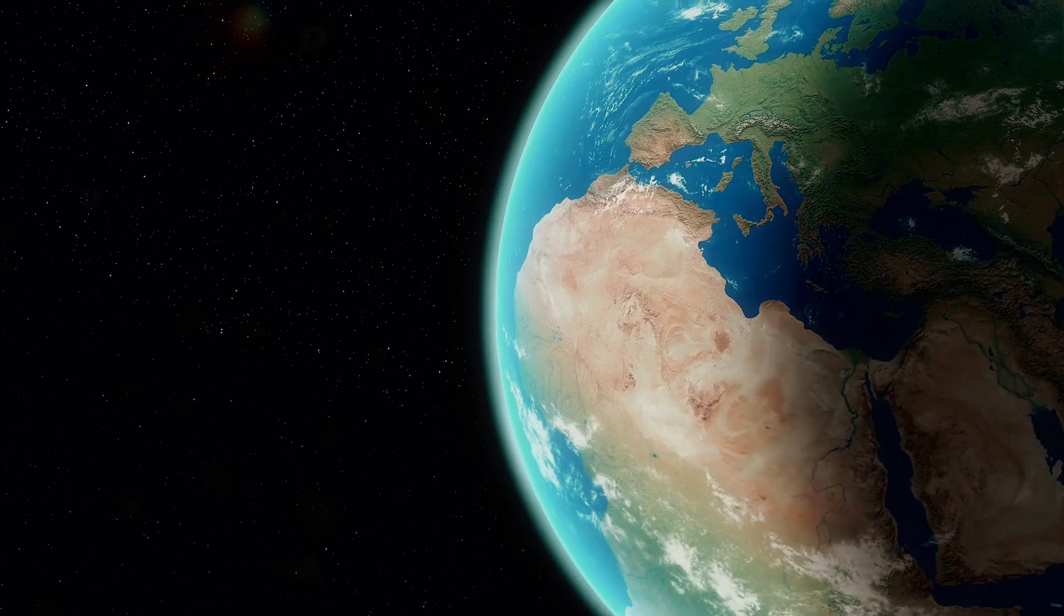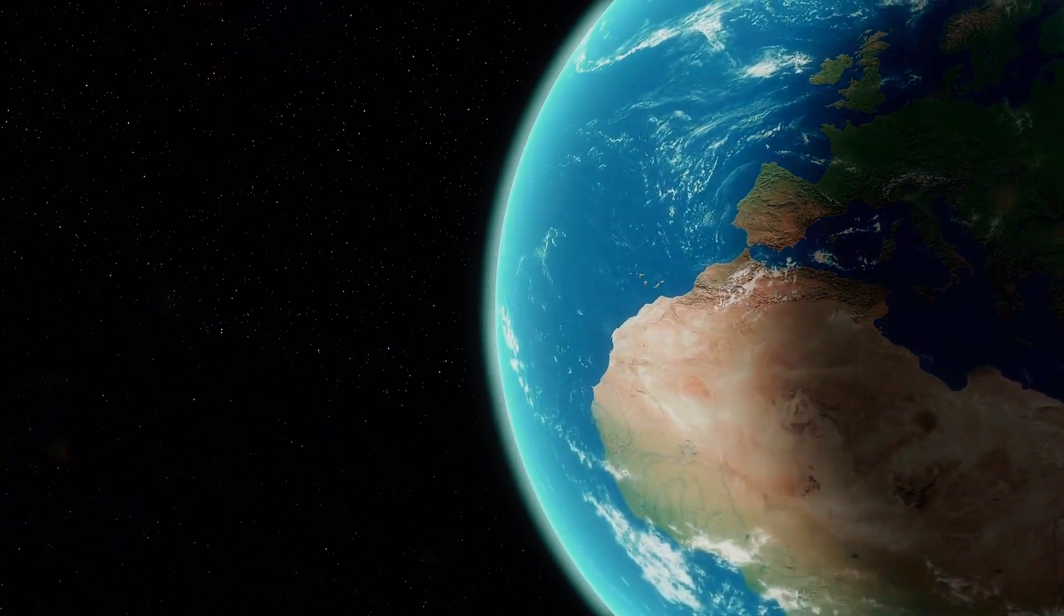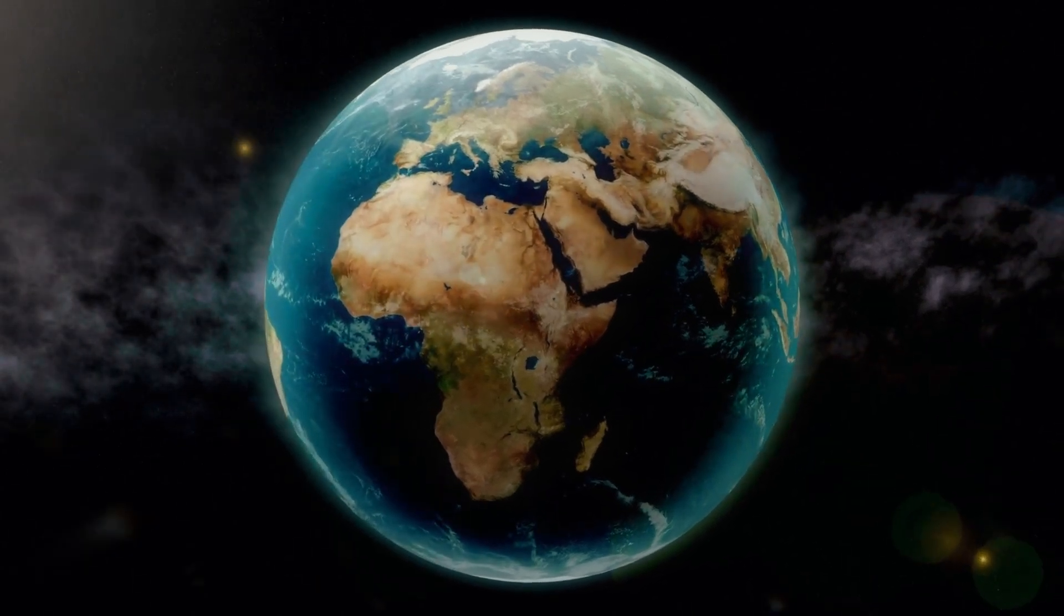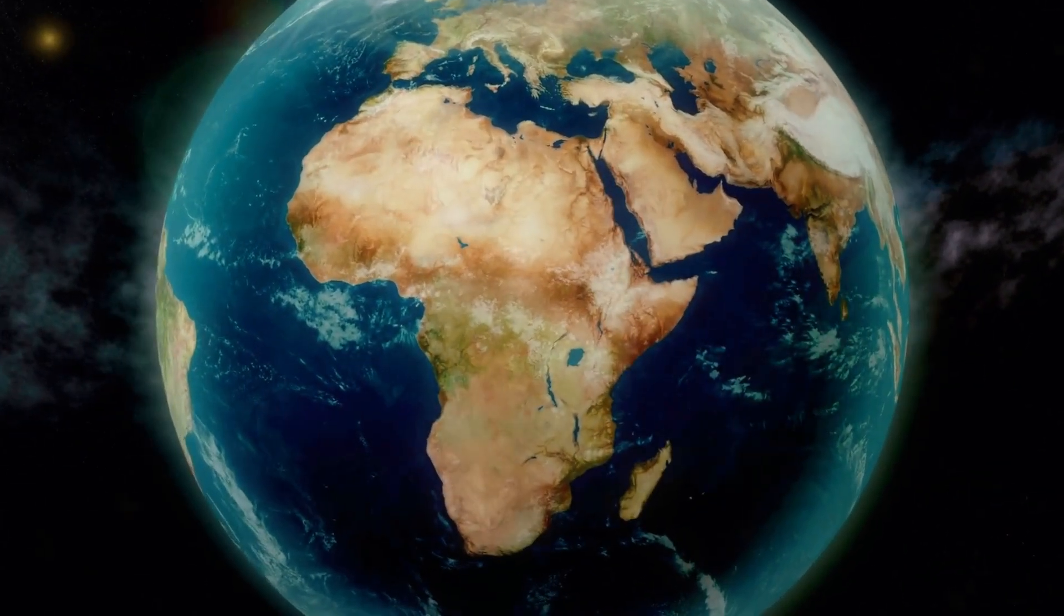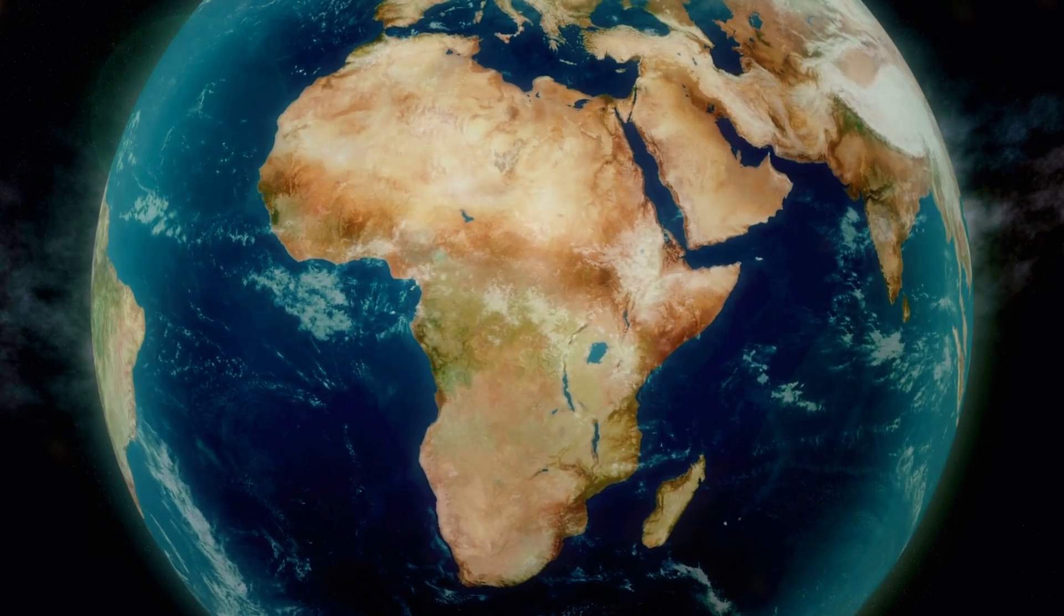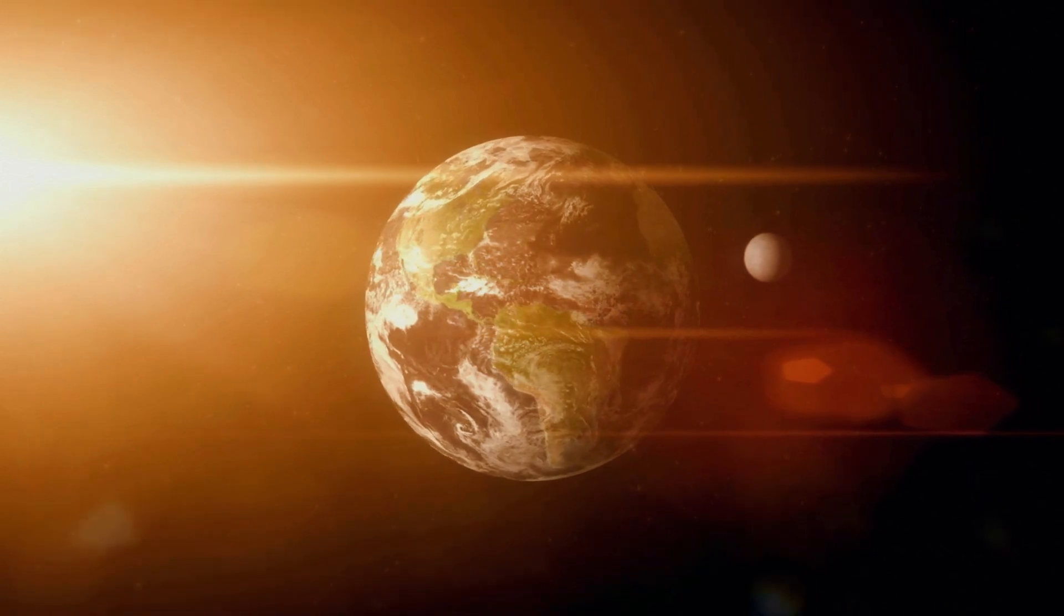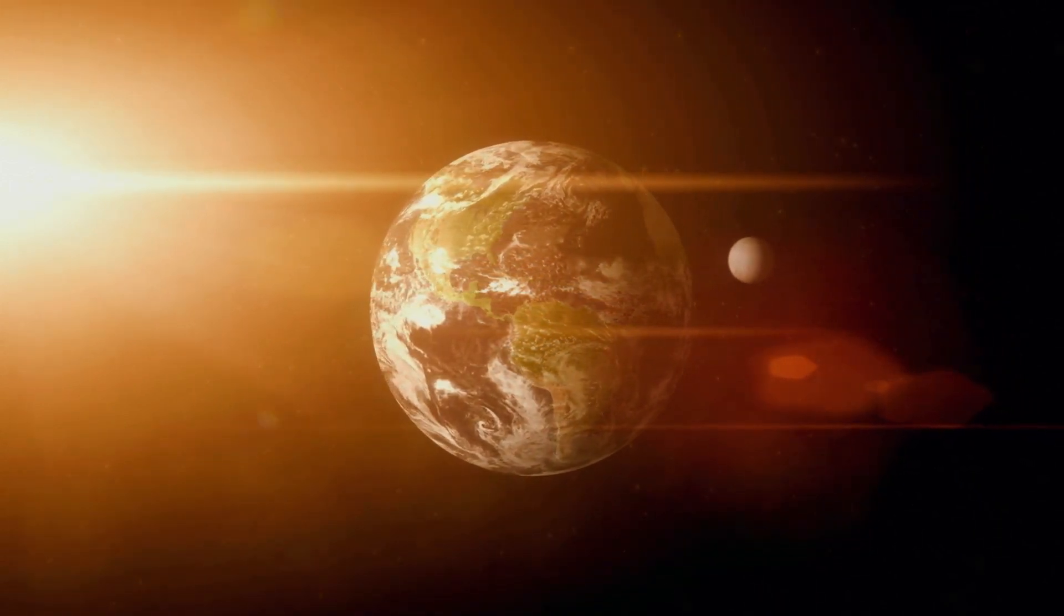Earth may be small on the cosmic scale, but its fate depends heavily on the solar system's position during the merger. If we're near the edge of the galactic disk, we could be ejected into intergalactic space, where the lack of heat and light would spell certain doom for all life. The thought of Earth drifting away from the sun, lost in the cold vastness of space, is chilling.